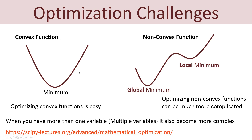Here are some of the challenges with optimization. We have two types of functions: convex and non-convex. For a convex function it's easy to find the minimum or maximum. For a non-convex function you could have local and global minima or maxima, making optimization more complicated — especially when you have more than one variable like x, y, z, etc.